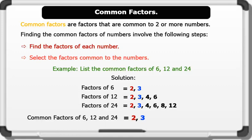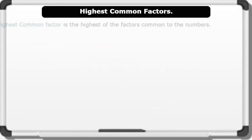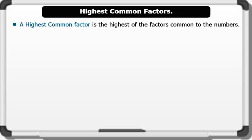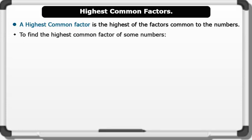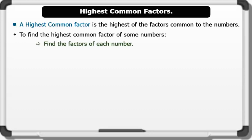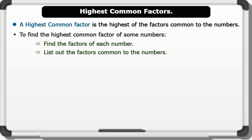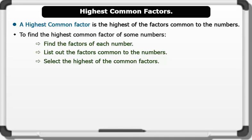Now let's look at highest common factors. A highest common factor is the highest of the factors common to the numbers. To find the highest common factor of some numbers: 1. Find the factors of each number. 2. List the factors common to the numbers. 3. Select the highest common factor. Let's see an example.